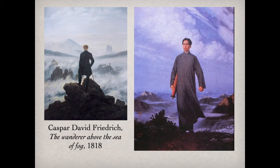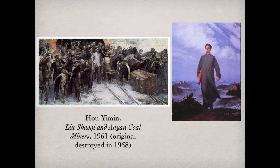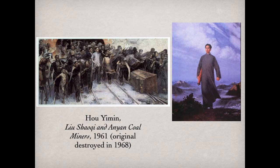An earlier painting, 'Liu Shaoqi and the Anyuan Coal Miners' by Hou Yimin, would be criticized and ultimately destroyed because it represented a false ideology. It showed Liu Shaoqi — a rival leader within the Communist Party — surrounded by miners charging out of the mine to engage in the strike, a very different ideology about the Communist Party. What we really see during the Cultural Revolution is that Mao stands alone: no one else was allowed to share any of the glory.